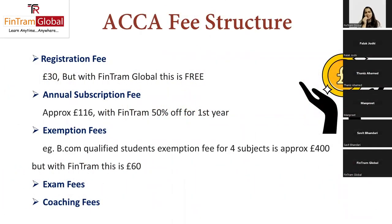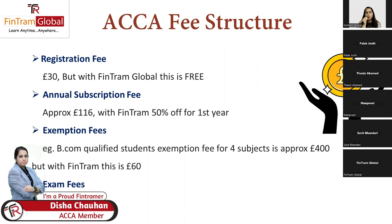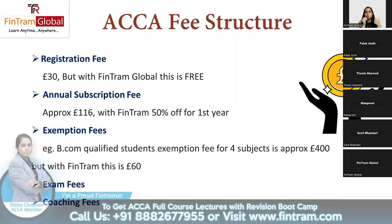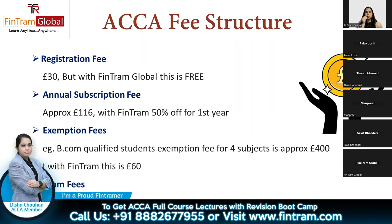Let's talk about ACCA fee structure, because any course we think of doing, we have to know the fees — how much money we are going to be spending. All amounts are mentioned in pounds since ACCA charges in pounds. One pound is approximately 90 rupees, though this fluctuates. These fees can also change at ACCA's discretion — so 30 pounds could become 31 or 32, and 116 could become 114 or 118, but more or less this is what it is.